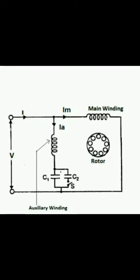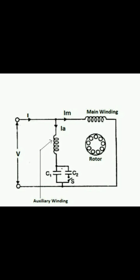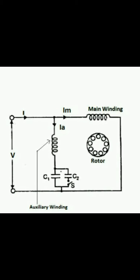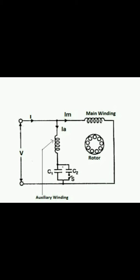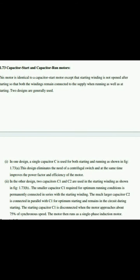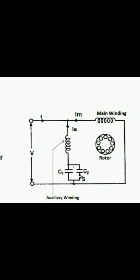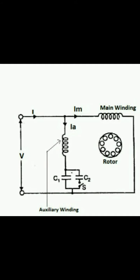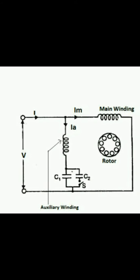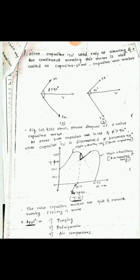C2 remains in the circuit during starting. The starting capacitor C2 is disconnected when the motor approaches about 75% of synchronous speed, and the motor then runs as a single-phase induction motor. As shown in the figure, S is a centrifugal switch. Capacitor C1 is available during both starting and running conditions, which is why this motor is called the capacitor start and capacitor run motor.